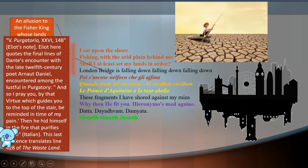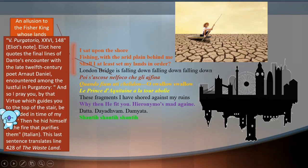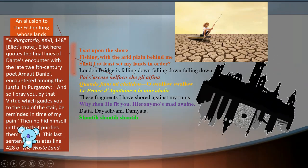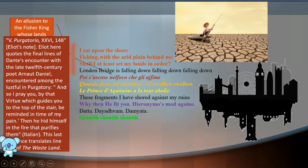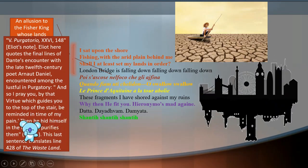We can read this note. Eliot quotes the final lines of Dante's encounter with the late 12th-century poet Arnaut Daniel, encountered among the lustful in Purgatory. And so I pray you by that virtue which guides you to the top of the stair—and there were other references to lustfulness in the poem, the whole part three was about lust—be mindful in time of my pain. And then he hid himself in the fire that purifies them. So the fire is purifying and not burning. This translates line 428 of The Waste Land. So maybe there is hope to go up the stairs.